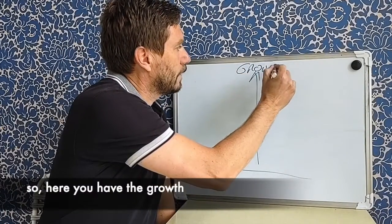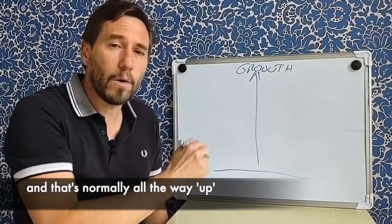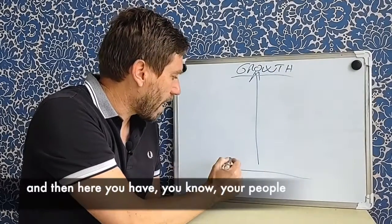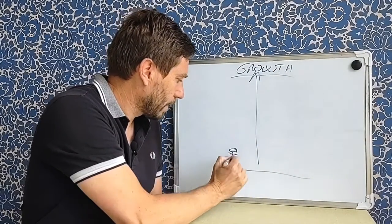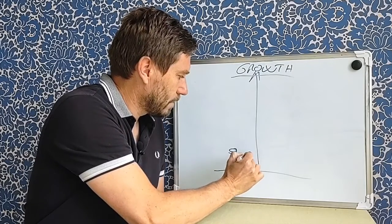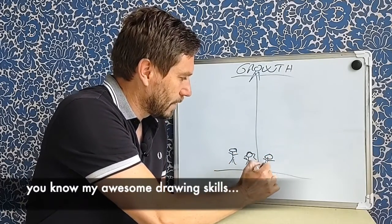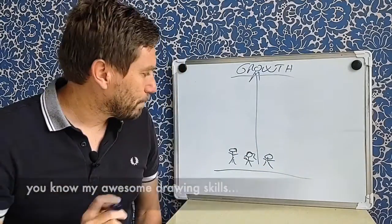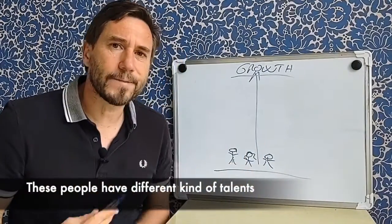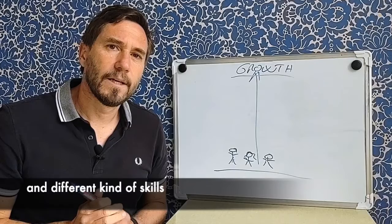So here you have the growth that's normally all the way up, and then here you have your people. You know, my awesome drawing skills. These people have different kinds of talents and different kinds of skills.